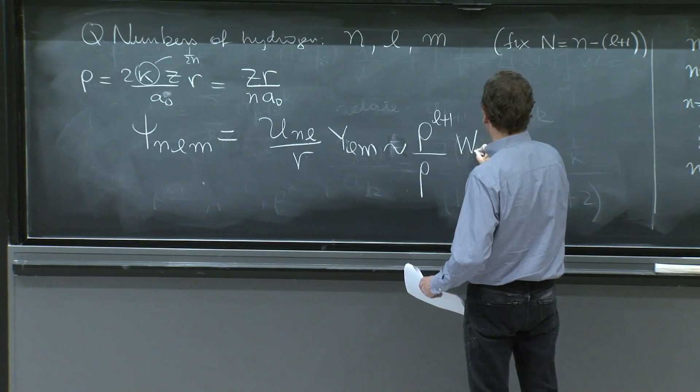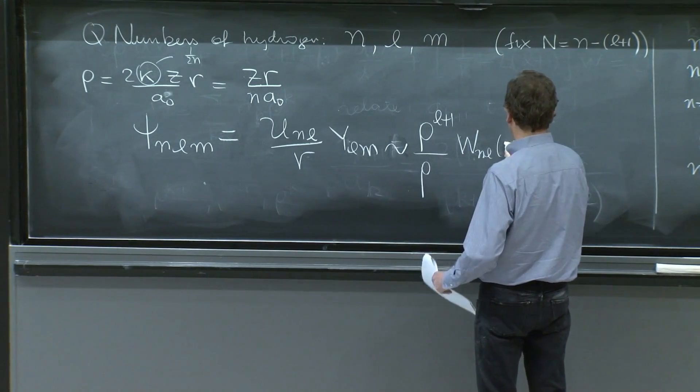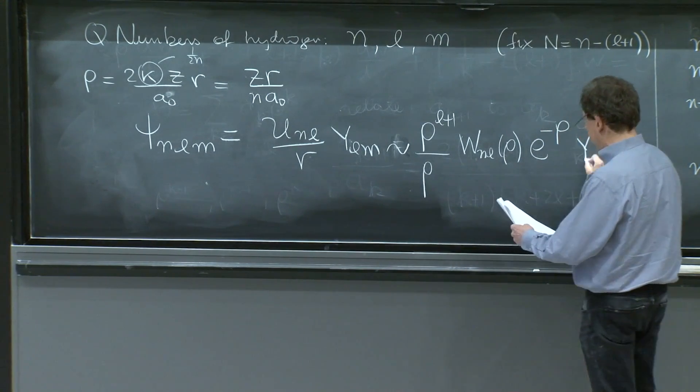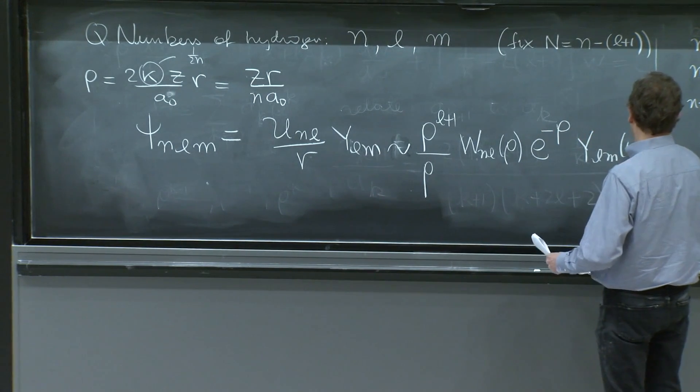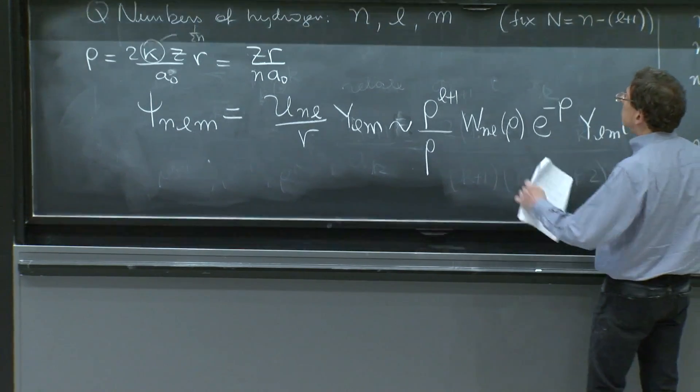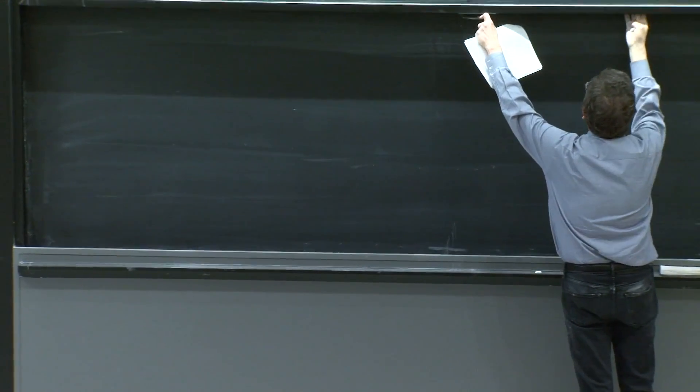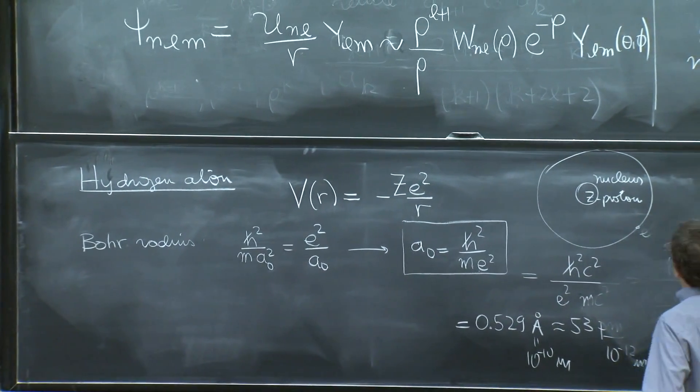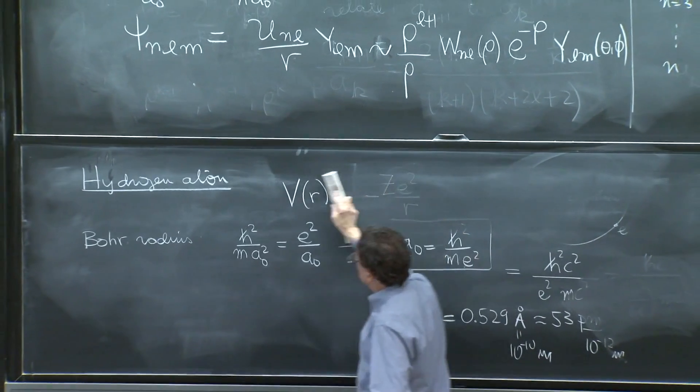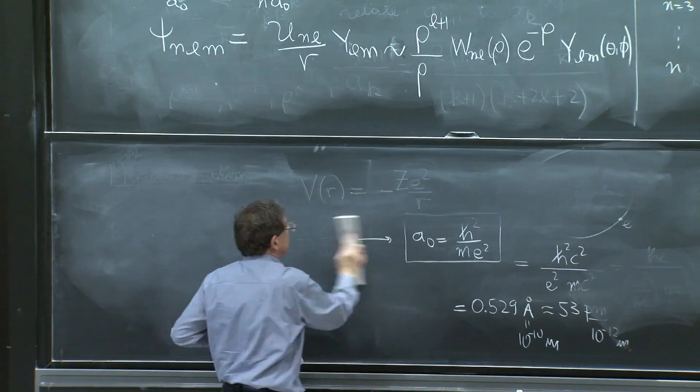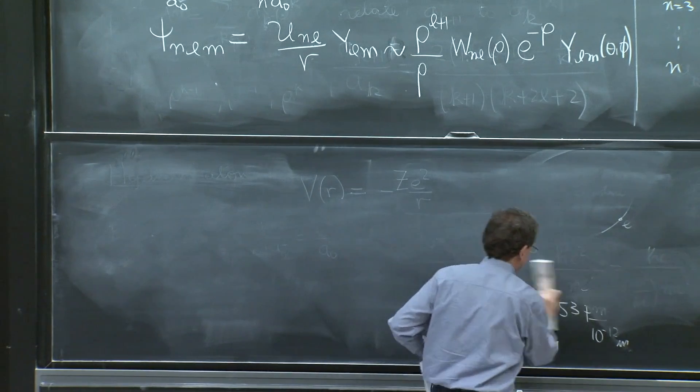So this is like a rho, a w nl, if we wish, of rho, e to the minus rho, e to the minus rho, and ylm, theta phi. So, well, let's write one more equation, and we'll finish.